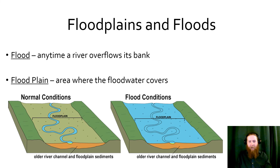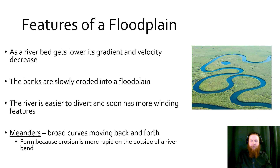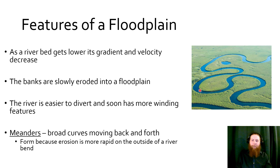Floodplains and floods: a flood is anytime water overflows its banks and channel, and the floodplain is the whole area where that water can spread. As the riverbed gets lower, gradient and velocity decrease — these are usually slower rivers. The banks are eroded into what we call a floodplain. At this point, the river is easy to divert, so we get winding features called meanders — broad curves that go back and forth as the river meanders across the floodplain. These form because erosion on the outside edge is greater than on the inside edge.